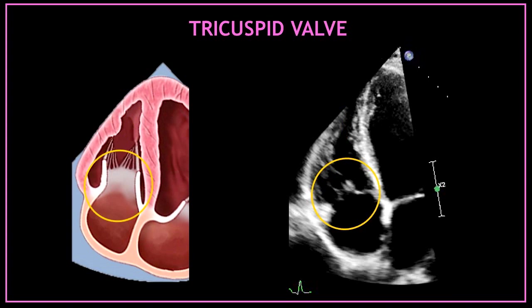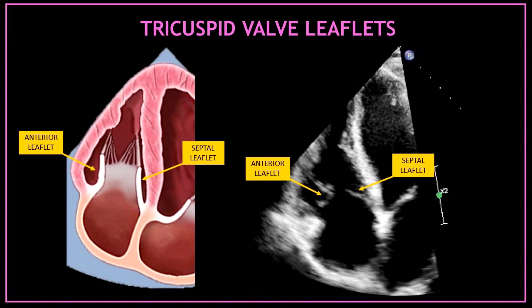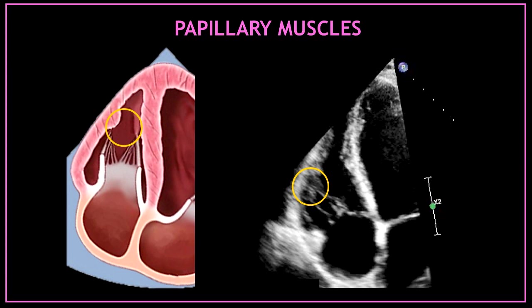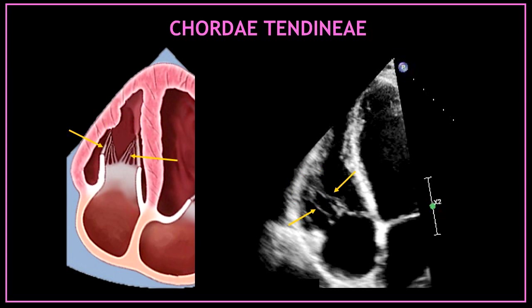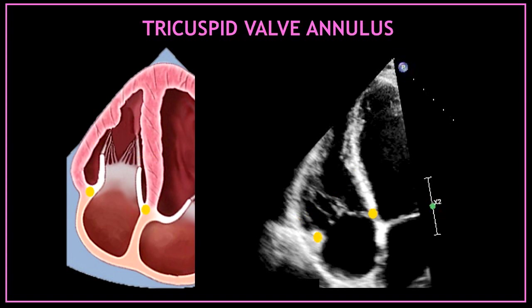The next valve visualized in this view is the tricuspid valve. Depending on the image, but most frequently in this view we can visualize the anterior tricuspid valve leaflet and the septal tricuspid valve leaflet. In the right ventricle, you will often be able to visualize the papillary muscle. Attached from the papillary muscles to the tricuspid valve leaflets, you can also see the tricuspid valve cords. We can also visualize and assess the tricuspid valve annulus.